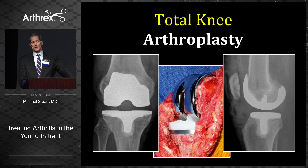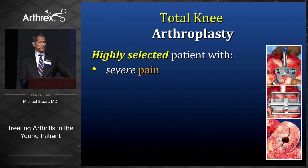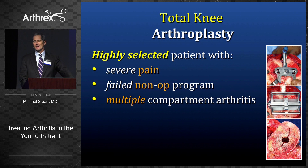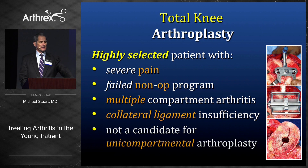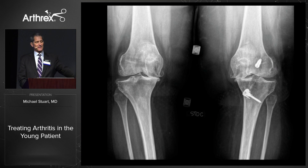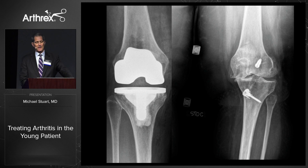There is a role for total knee arthroplasty in the young adult — in highly selected patients with severe pain who have failed a non-operative program and whose arthritis involves multiple compartments. In my practice, they often have associated problems like collateral ligament insufficiency that don't allow unicompartmental arthroplasty. Here's a recent case where the patient has had ligament surgery, meniscal surgery, lateral tibial subluxation, tricompartmental arthritis, and varus malalignment — best treated with a total knee arthroplasty.